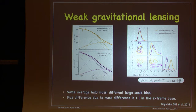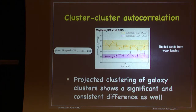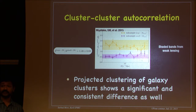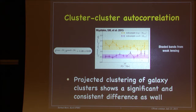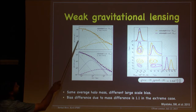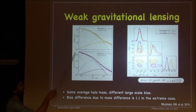Beyond just weak lensing, we can get a higher signal-to-noise ratio by looking at the clustering of these clusters through autocorrelations of these subsamples.